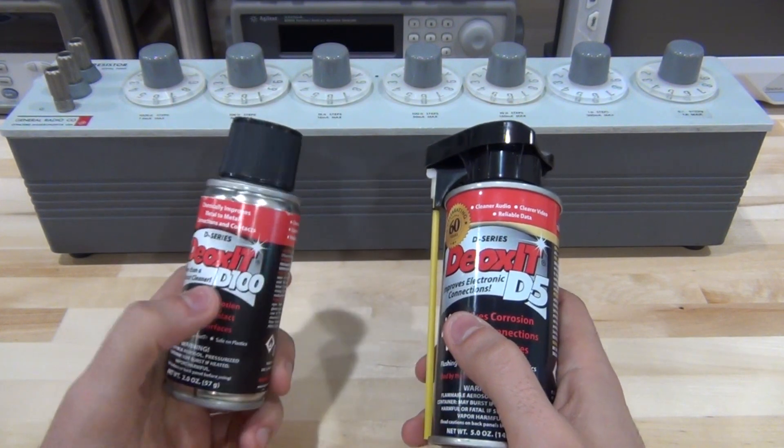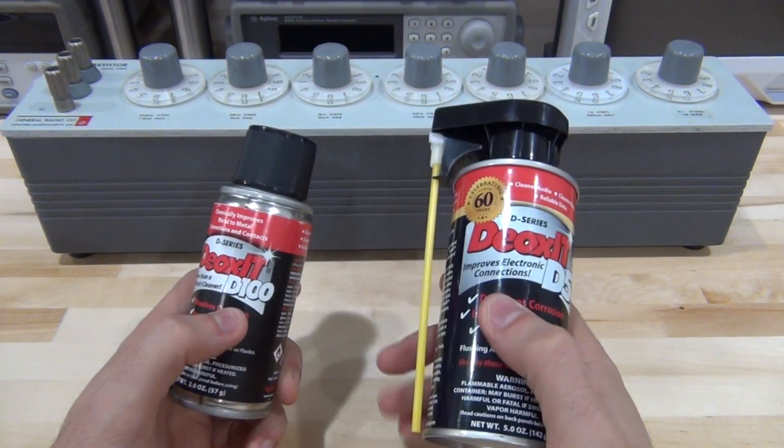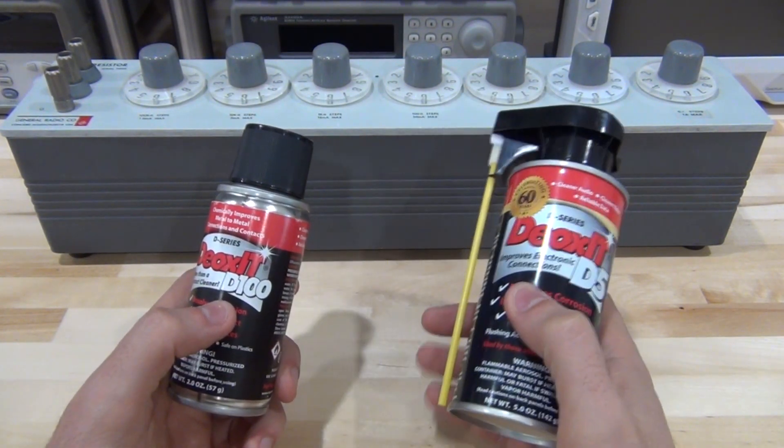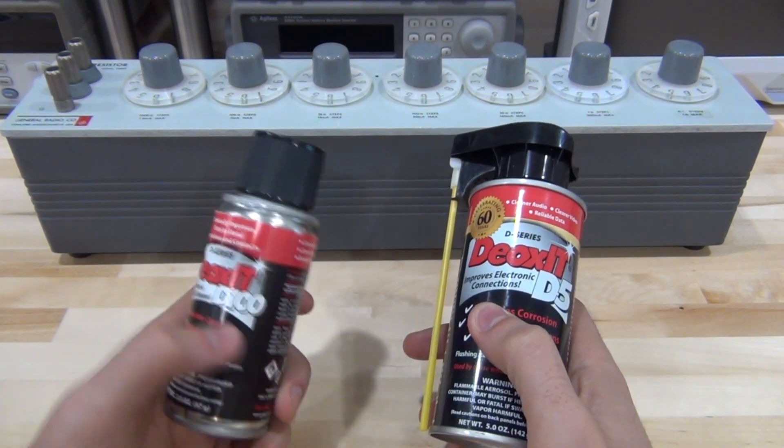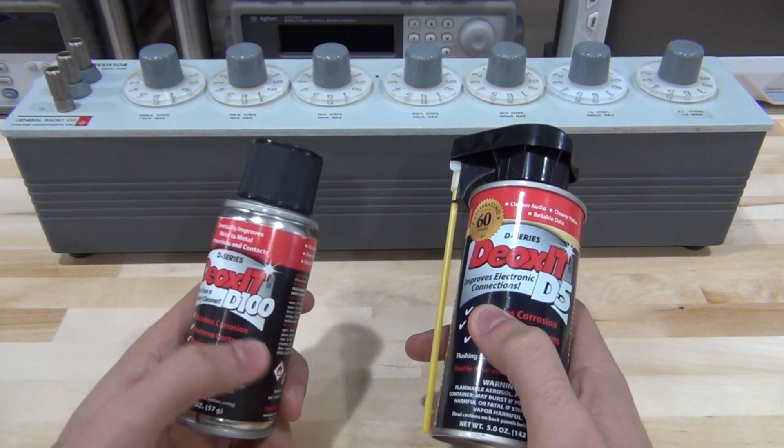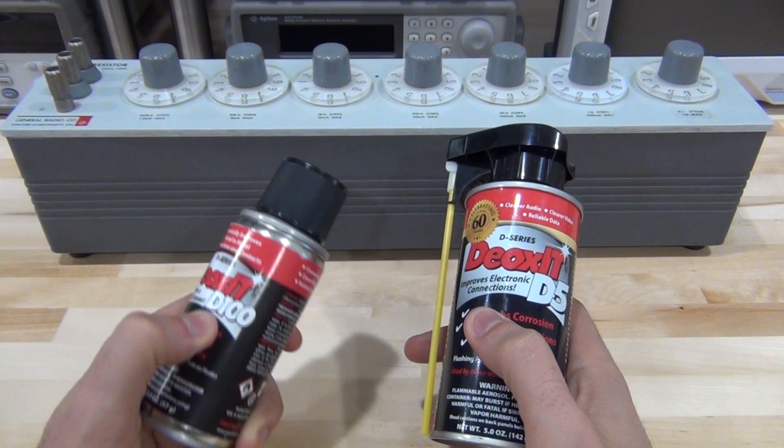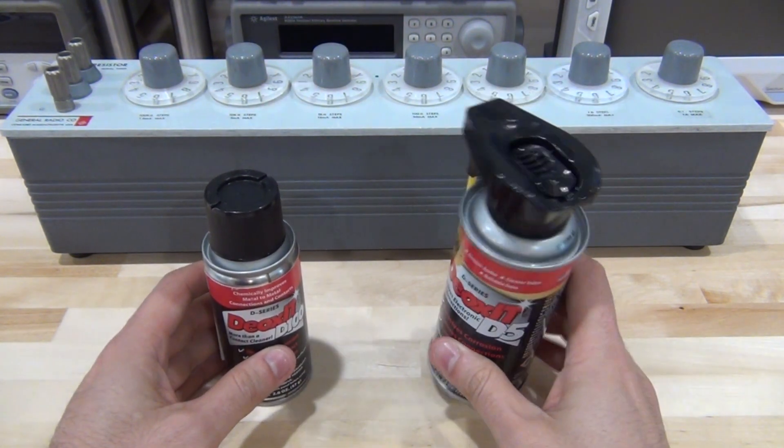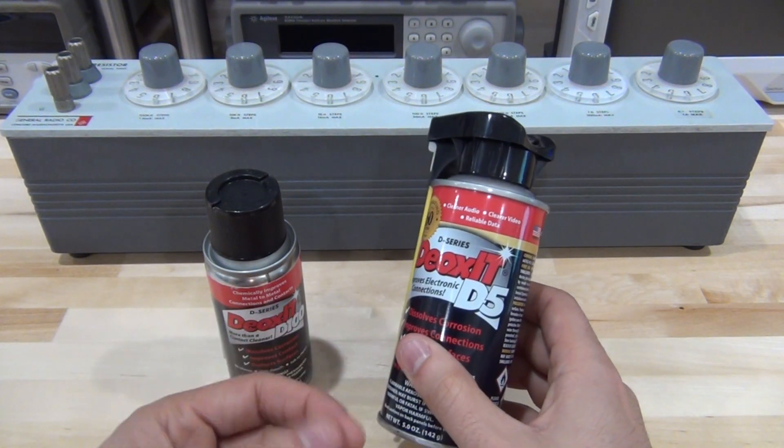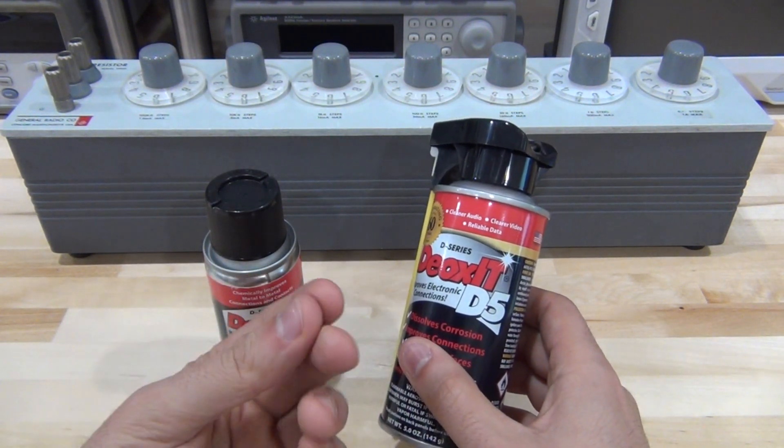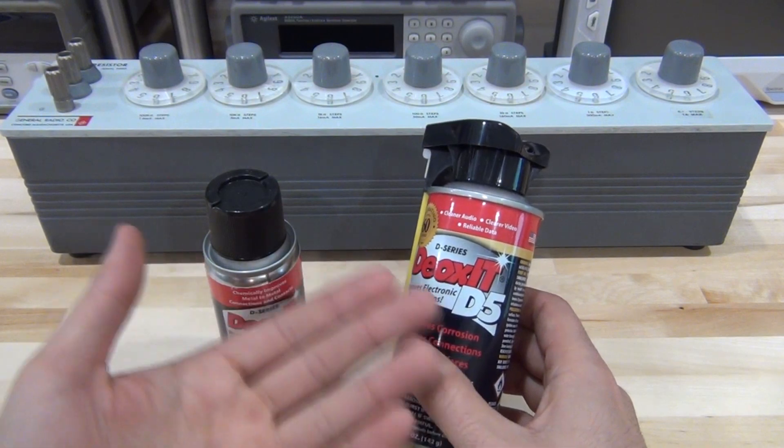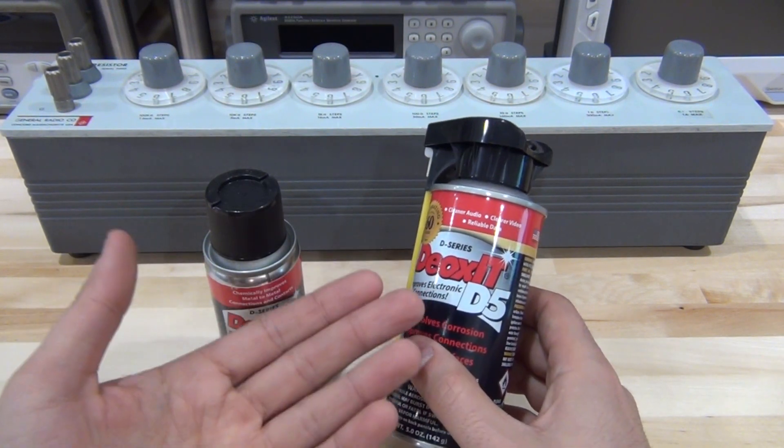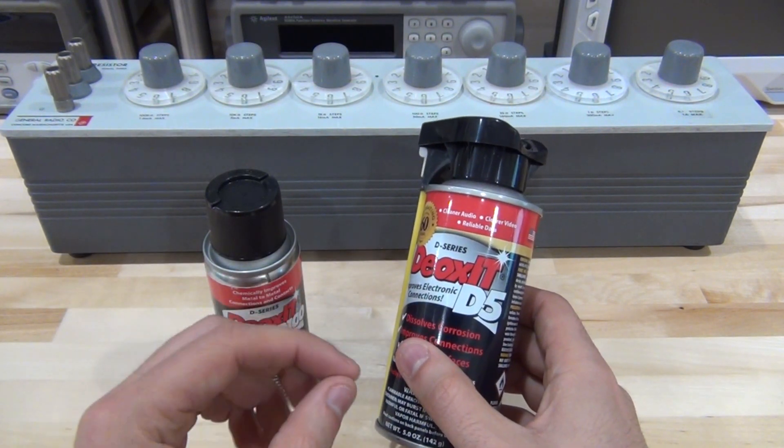The DeoxIT D100 is particularly intended for maybe older equipment, some vintage audio with buildup of corrosion and dirt that you'd want to clean up and improve the connectivity. The D5 is a generic metal on metal contact cleaner. It does more than just cleaning because it also seeps into the surface roughness of the metal creating better contact conductivity.